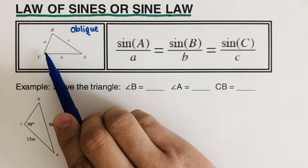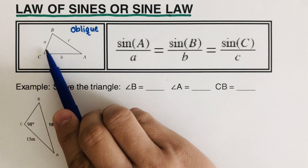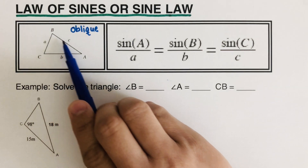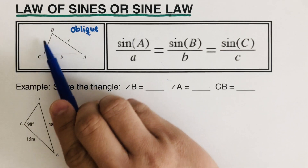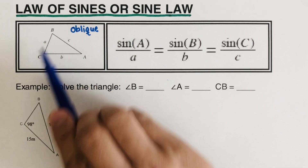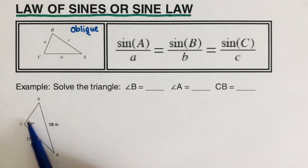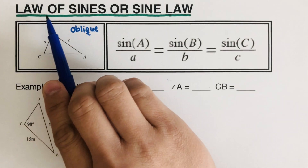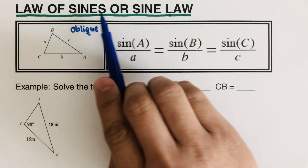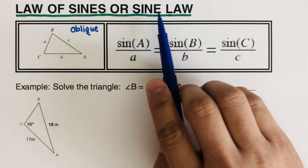As an example in this picture, there's no small square in one of the corners, which means this is not a right triangle. So if it's not a right triangle, we use the law of sines.